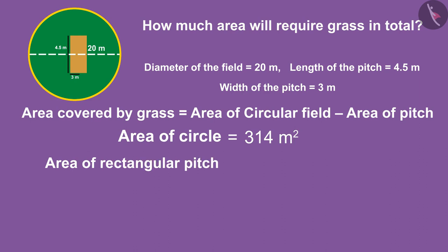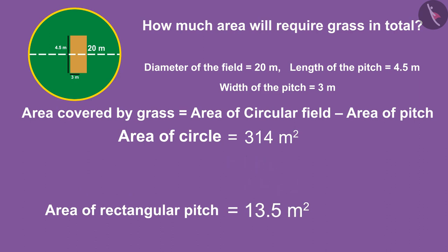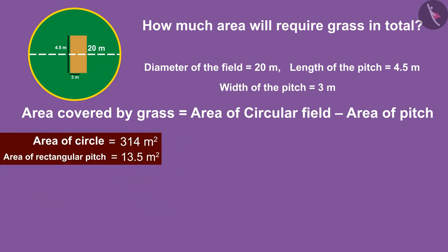Now, let's figure out the area of the pitch. Since the pitch is rectangular, the area of the pitch will be length times the width. Now, by substituting the values of field and pitch, can you find the area surrounded by grass?